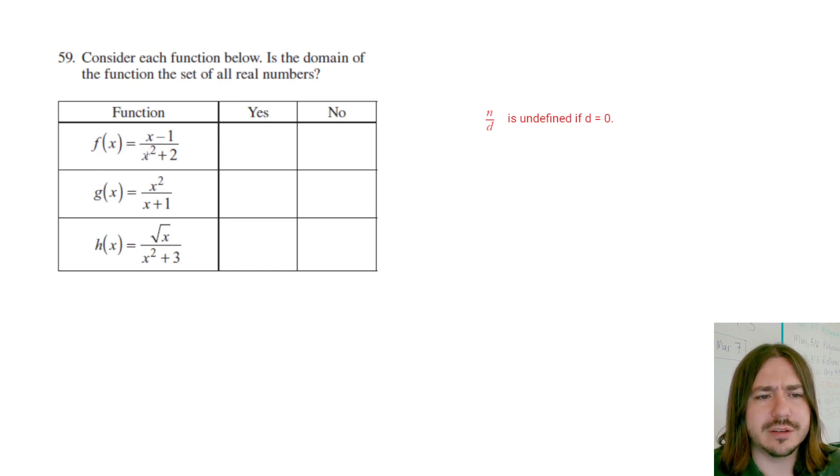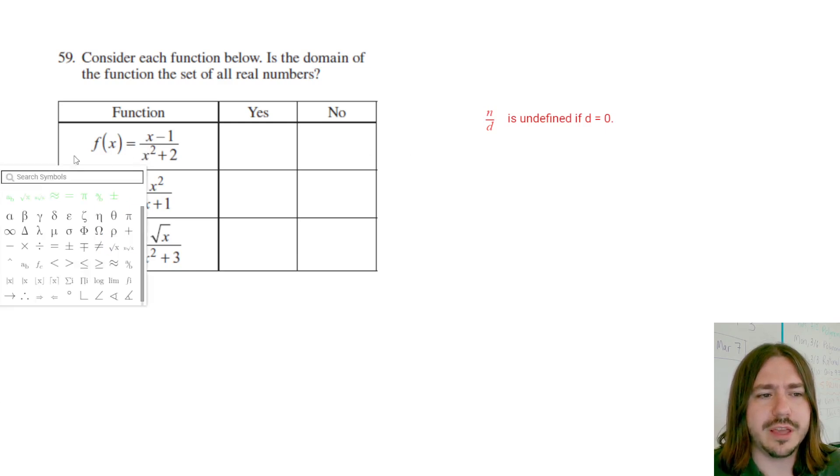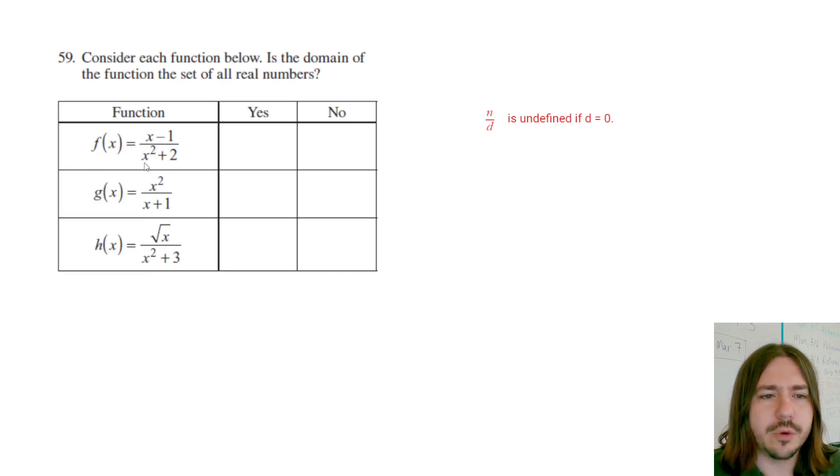But if there are no x values that cause that problem, then we'll check yes, the domain is all real numbers. In this case we want to be thinking, is there any value I could plug in? The answer is no, because I'm squaring this number. In order for this denominator to equal zero, this x squared would have to be negative two.